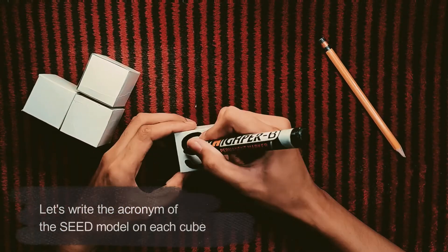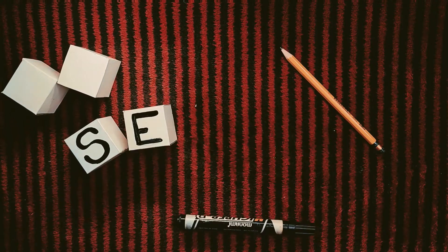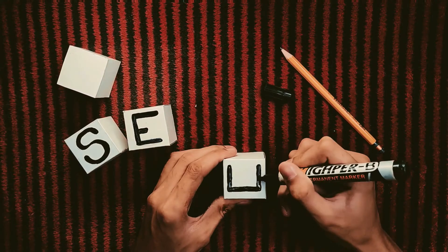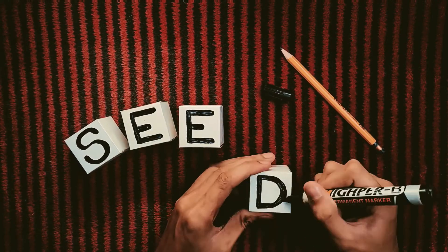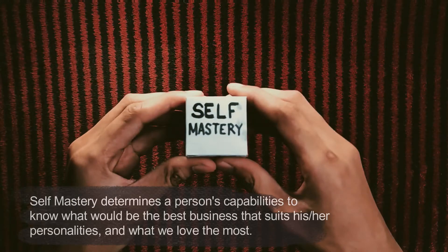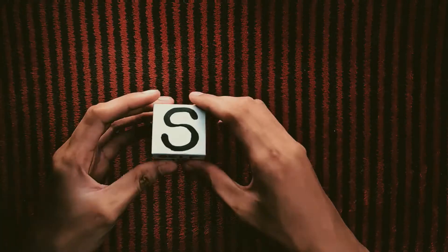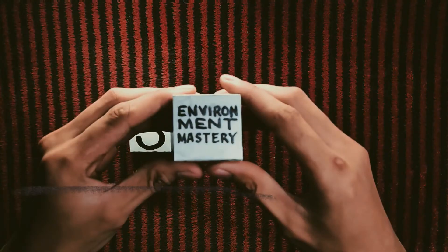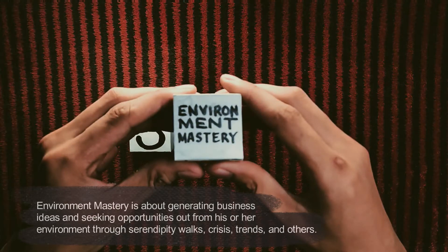Let's write the acronym of the seed model on each cube. Self-mastery determines a person's capabilities to know what would be the best business that suits his or her personalities, and what we love the most. Environment mastery is about generating business ideas and seeking opportunities out from his or her environment through serendipity walks, prizes, trends, and others.